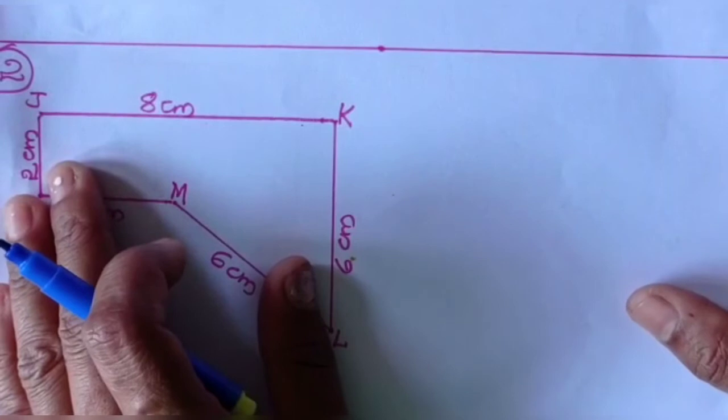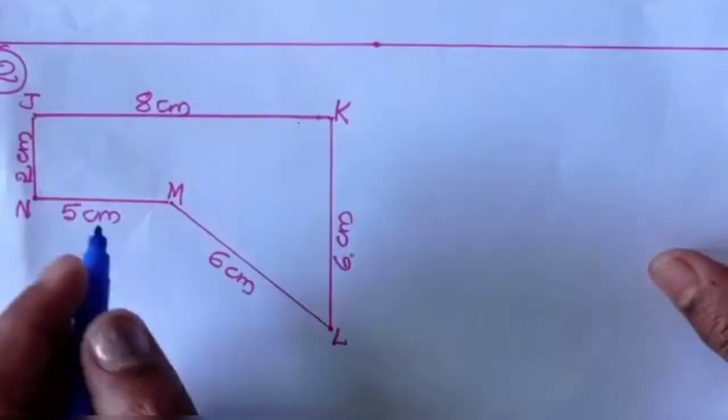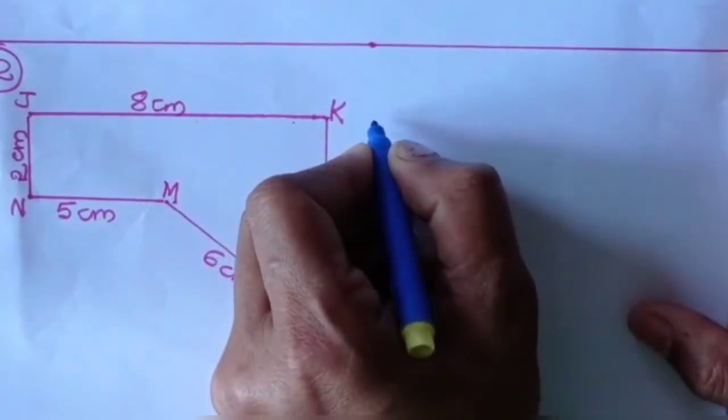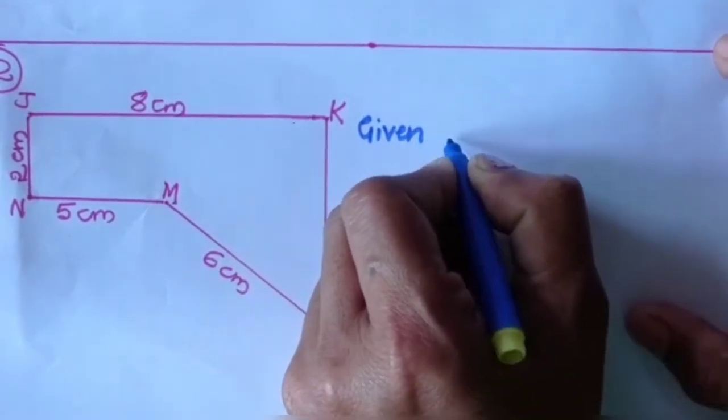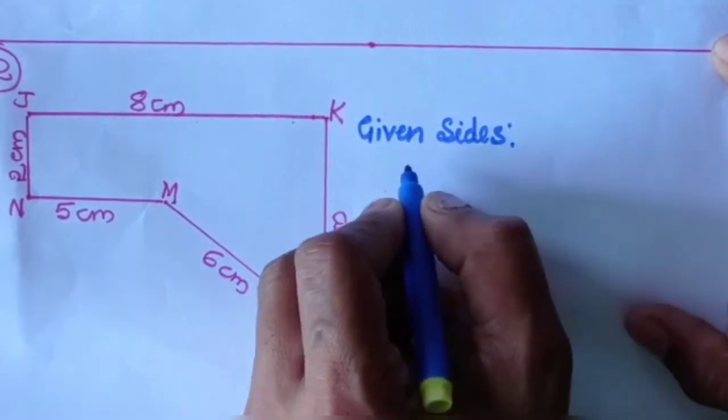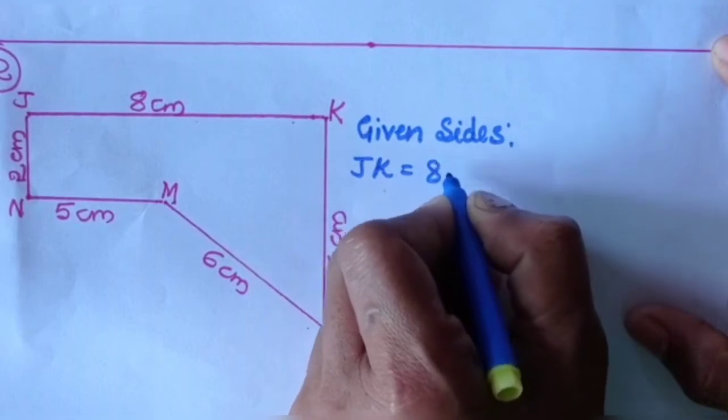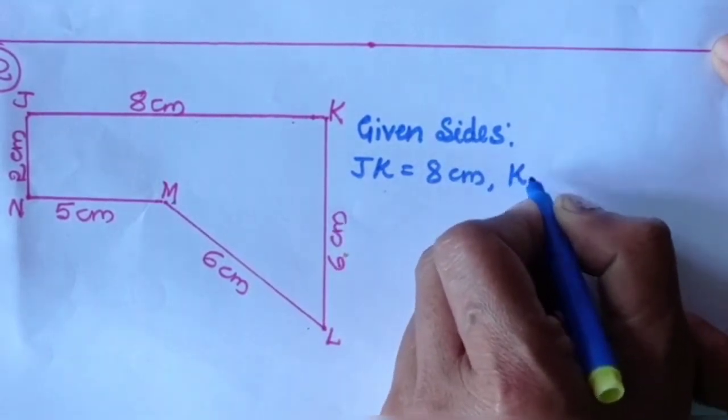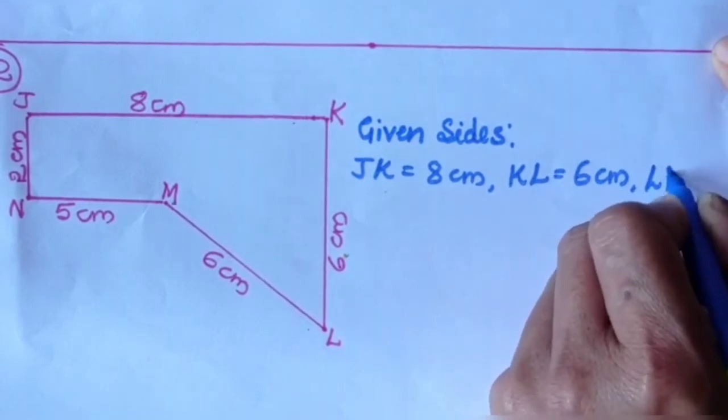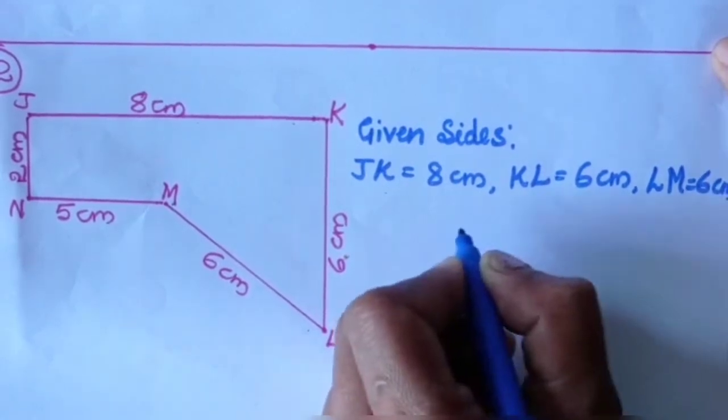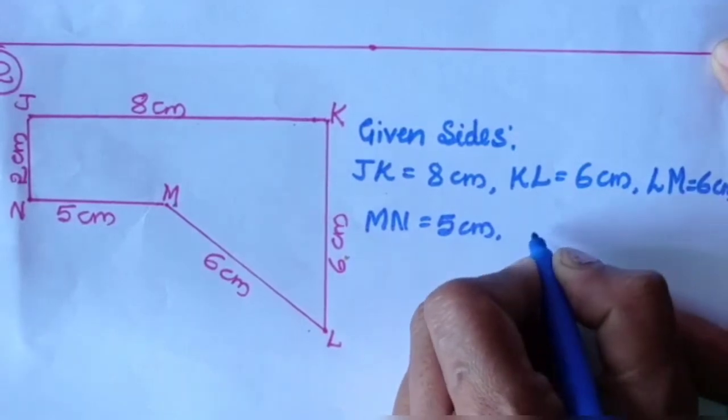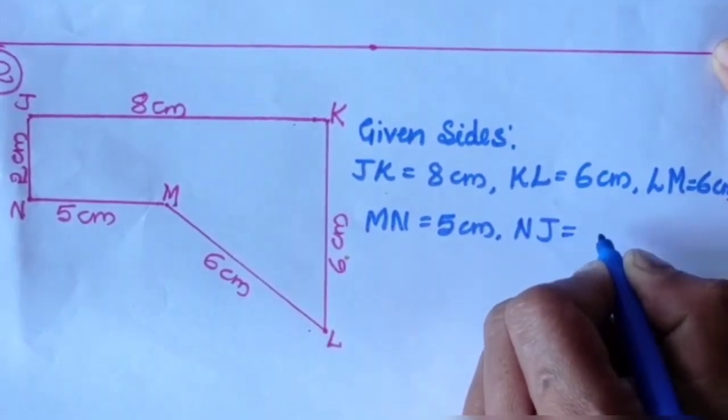Second one question. We find the perimeter of figure J, K, L, M, N. So first of all we write the given sides. JK equals 8 cm, KL equals 6 cm, LM equals 6 cm, MN equals 5 cm, NJ equals 2 cm.